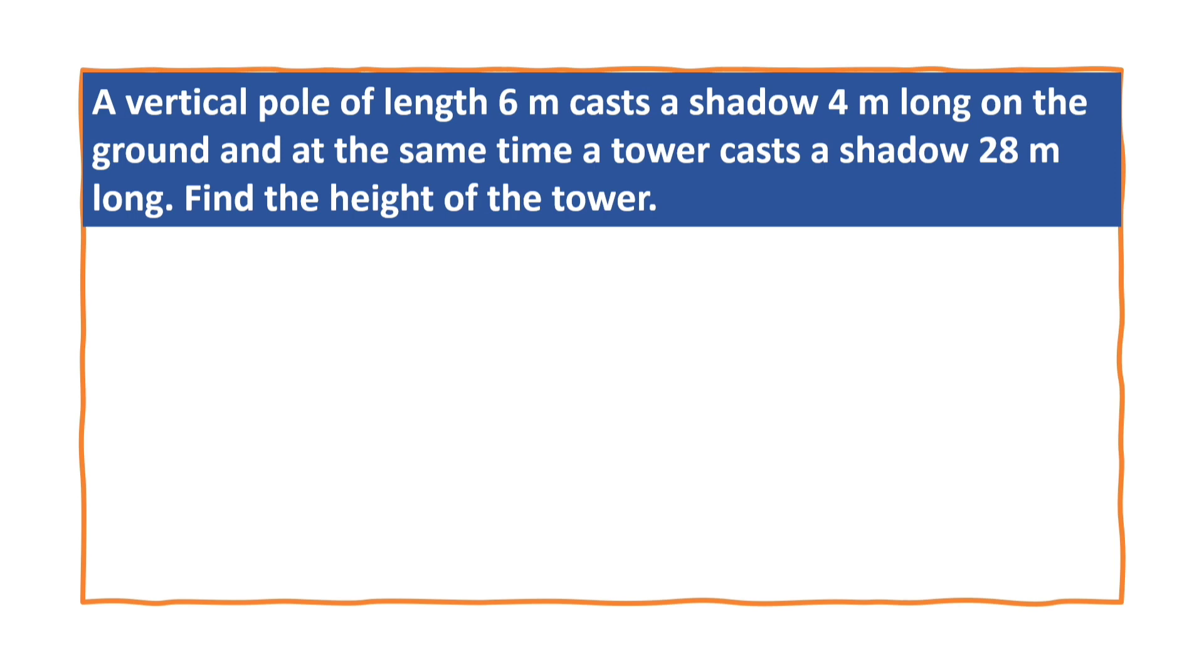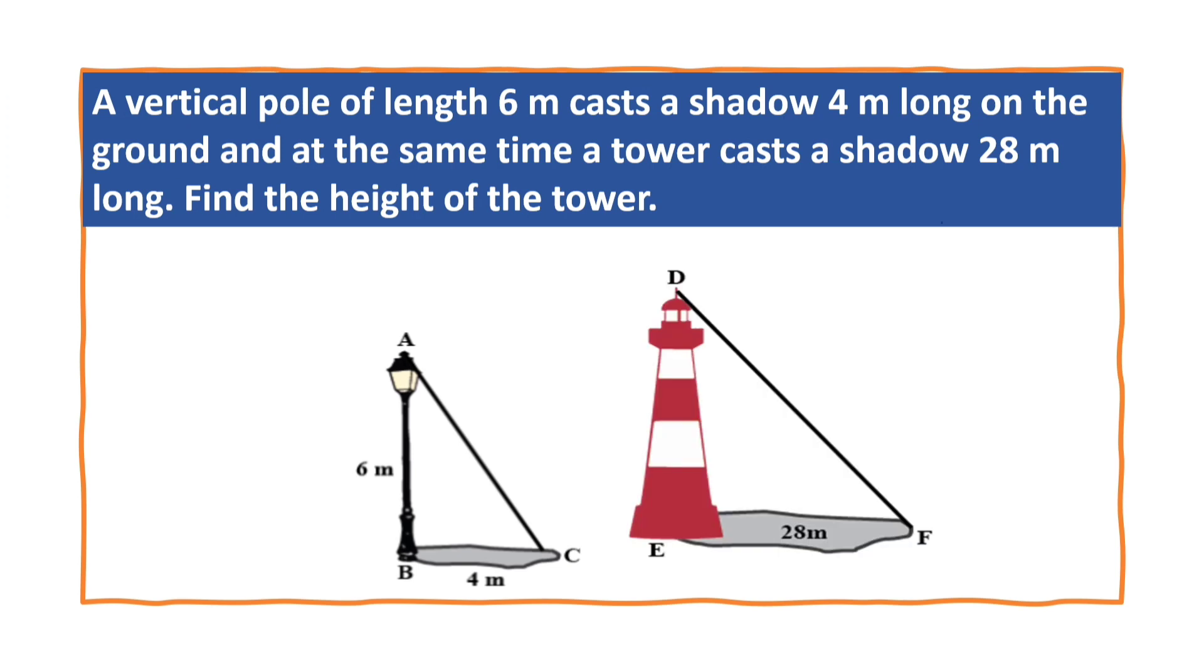Here we are given a pole. Its height is 6m and it casts a shadow of 4m. The tower's height is not given, we have to find it, and it casts a shadow of 28m. We have to find the height of the tower.